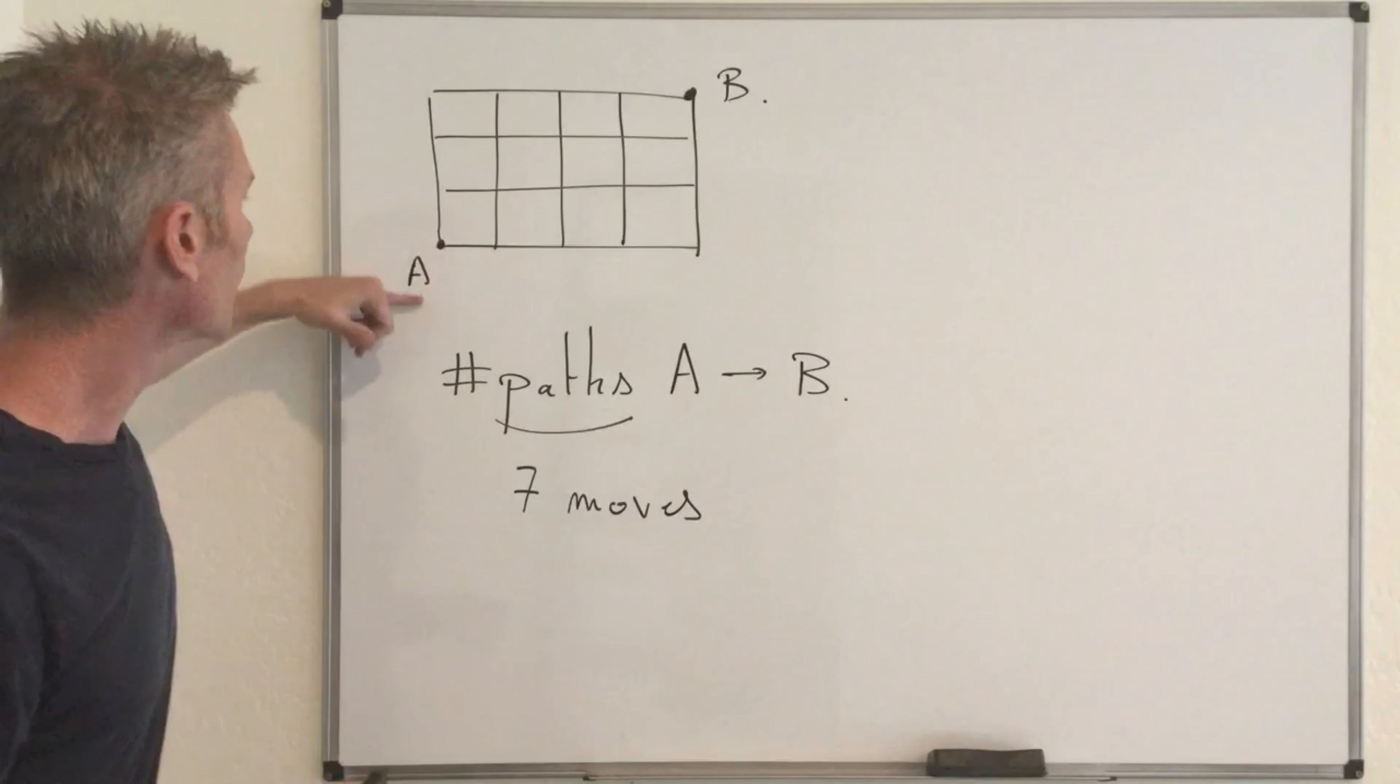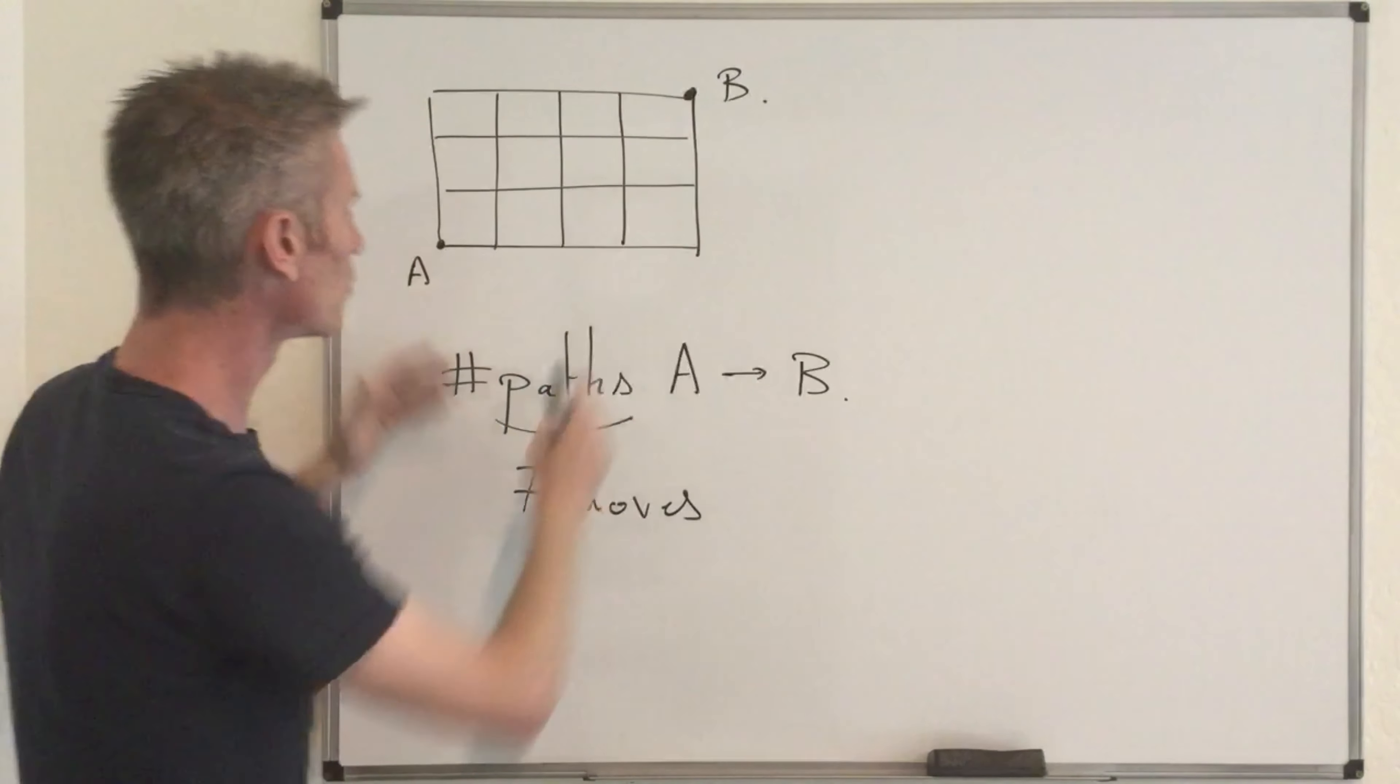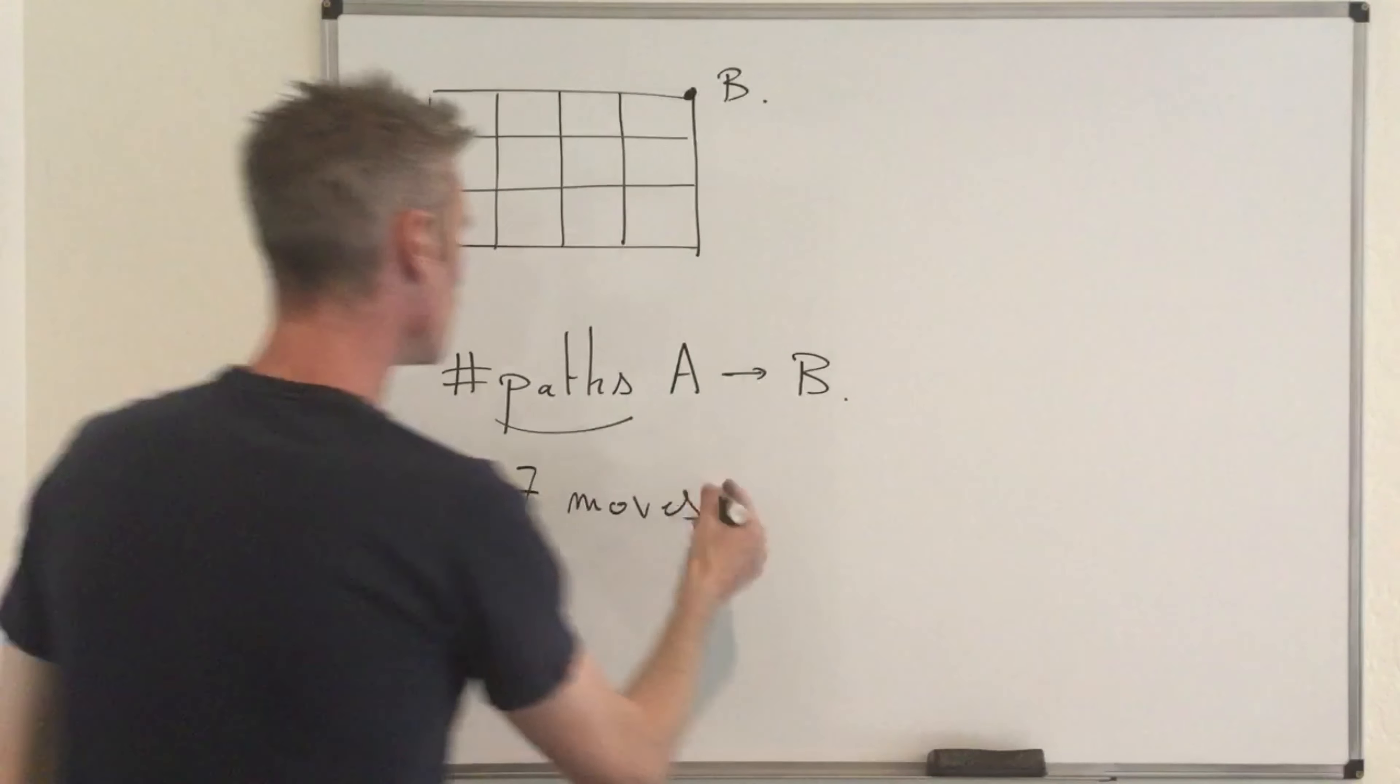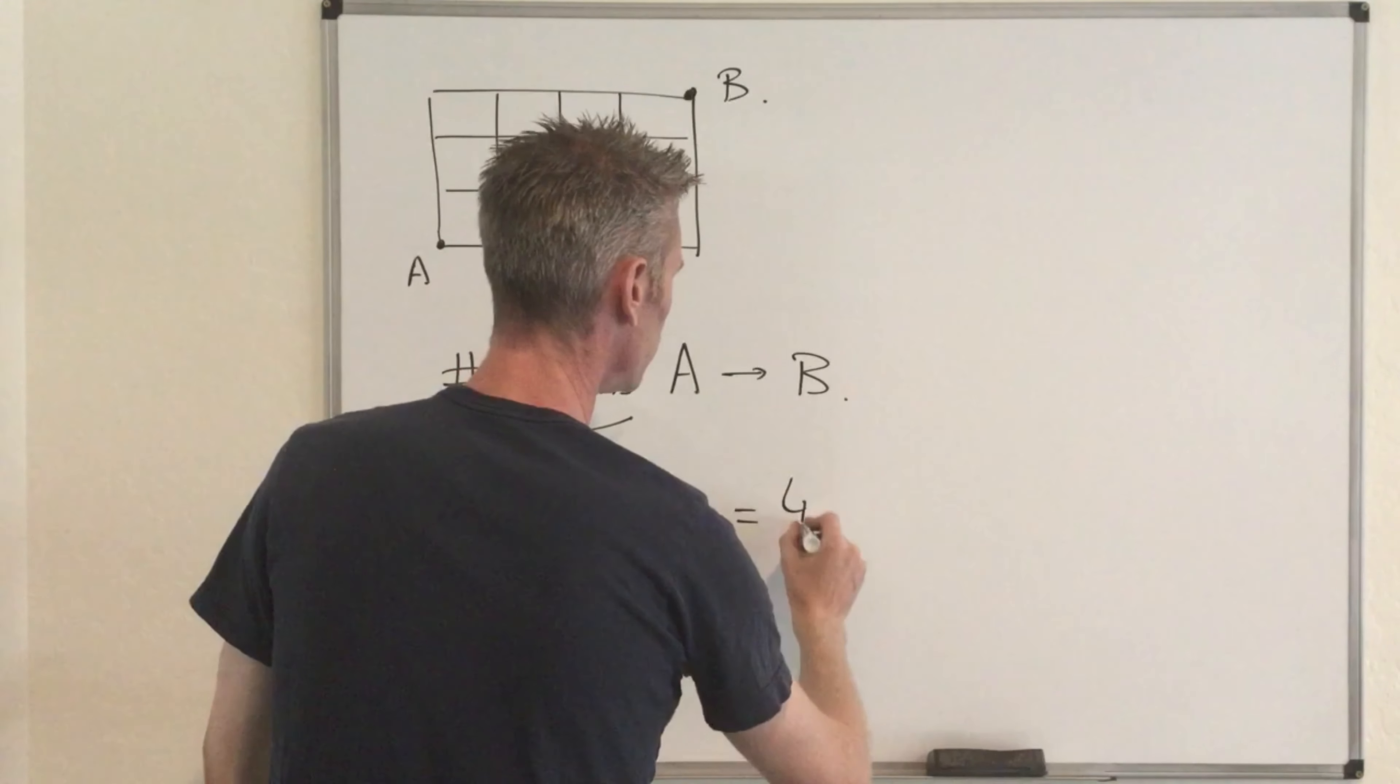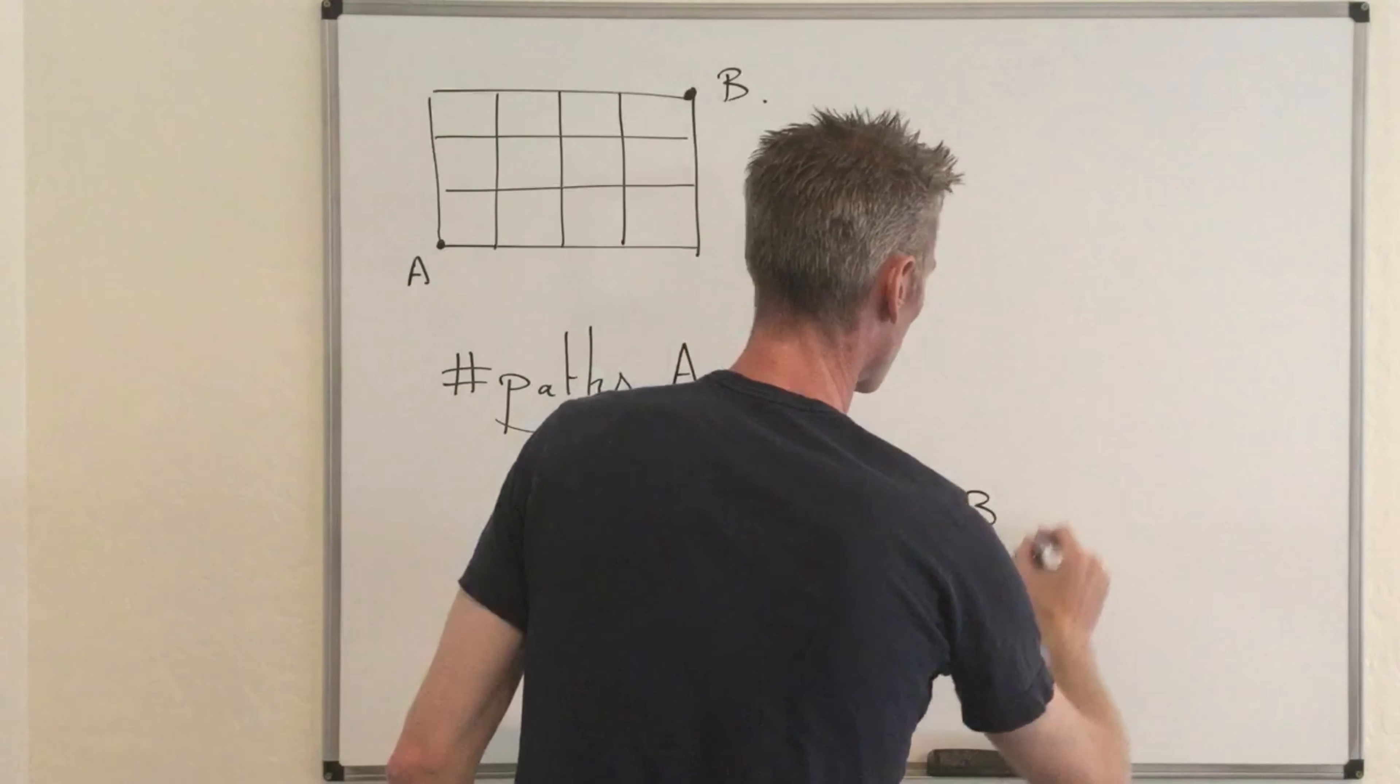And now clearly to go from A to B, you need to go four times to the right and three times up. And so your number of seven moves is decomposed into four right plus three up.